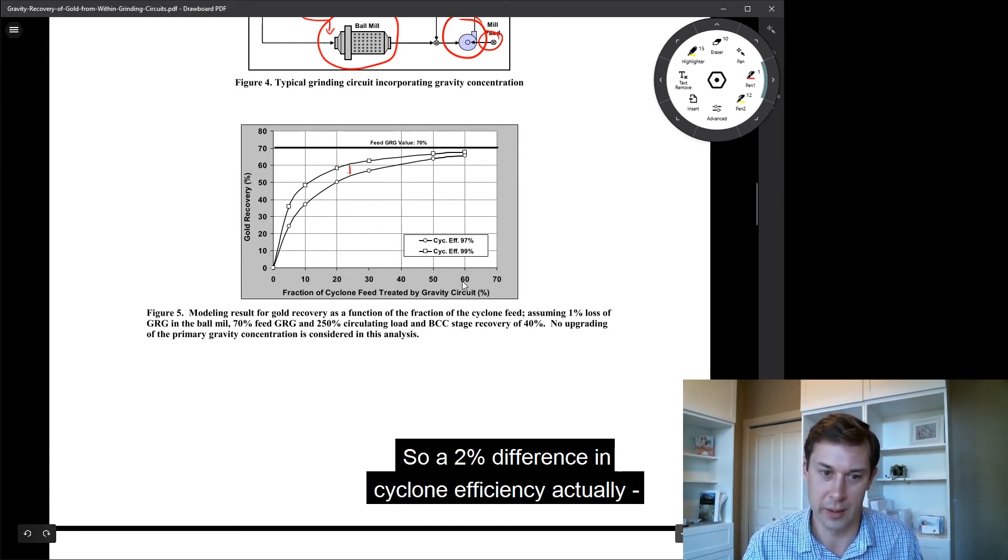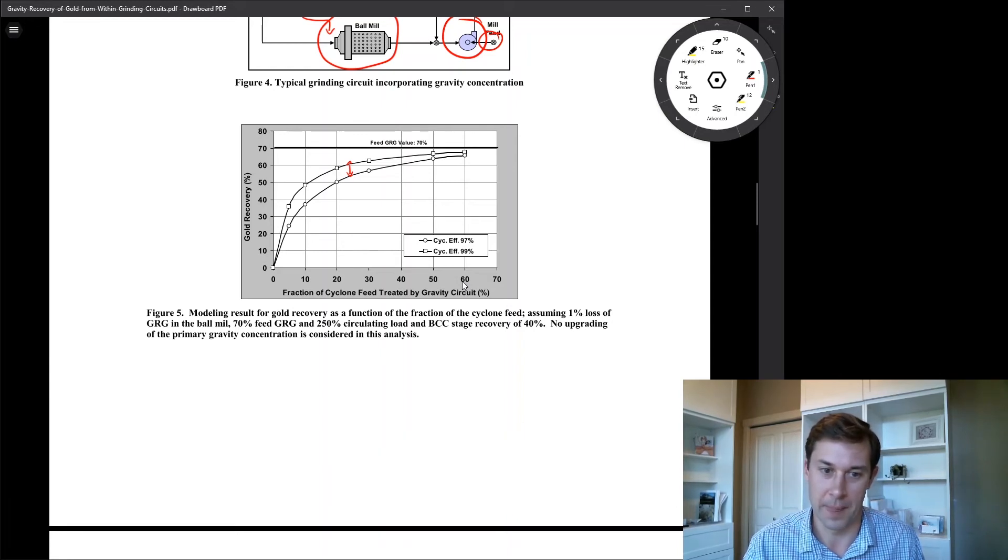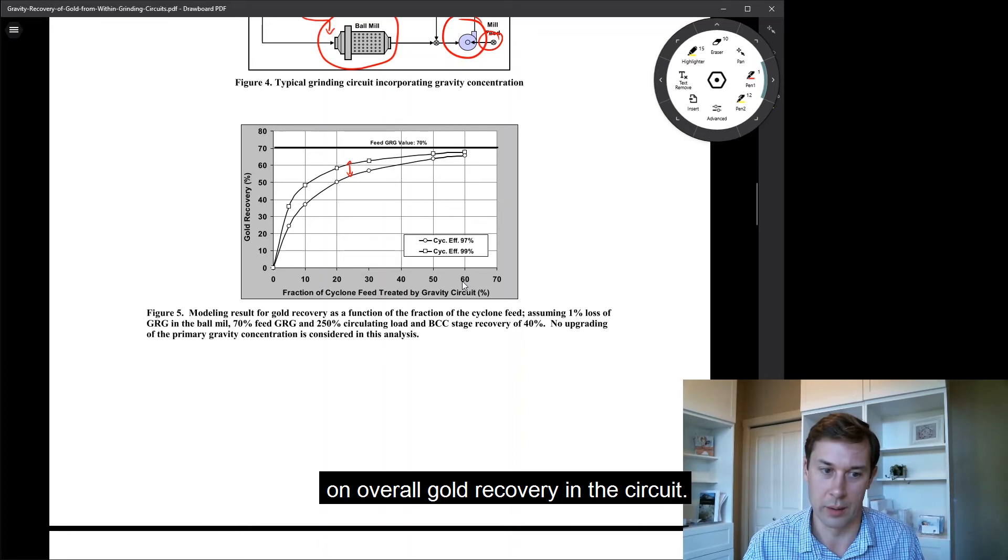So a 2% difference in cyclone efficiency for gold retention actually does have a substantial difference on overall gold recovery in the circuit.